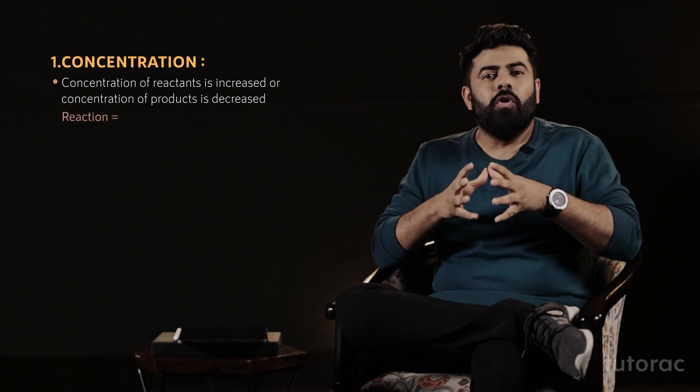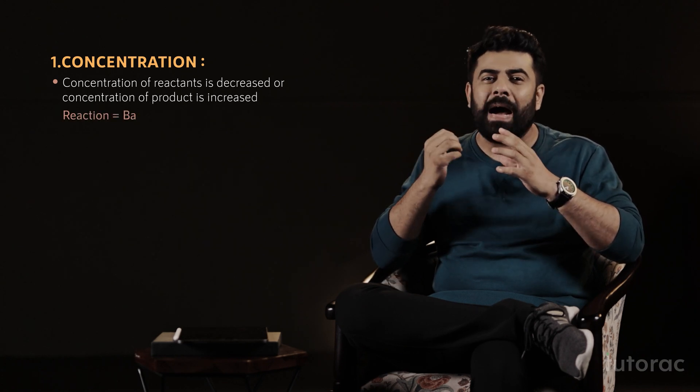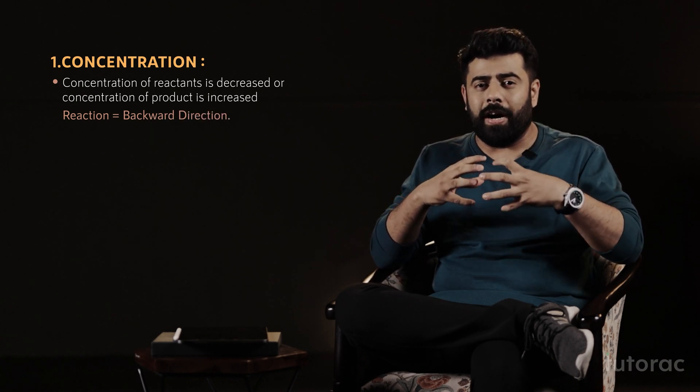In such a scenario, the equilibrium will try to regain its stability by producing more products, such that the concentrations again become constant. So if the concentration of reactants is increased or the products are decreased, the reaction tends to move in the forward direction. Or if the concentration of reactants decreases or products increase, the reaction tends to move in the backward direction consuming more products.